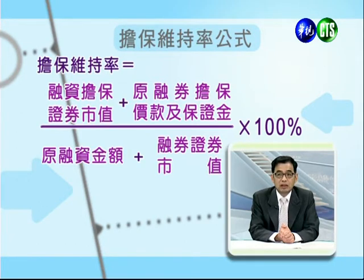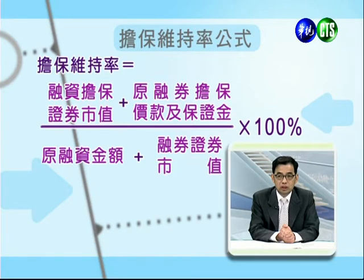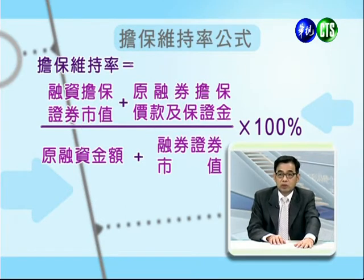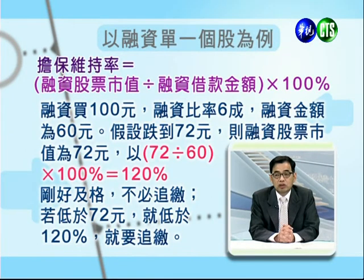担保维持率的计算公式：分子是融资担保证券市值加上原融券担保价款以及保证金（目前规定九成）；分母是原融资金额加上融券证券的市值，再乘以100%，算出来称为担保维持率。比如用融资买进股票，今天收盘价是十万，融资担保证券市值就是十万；买十万块股票融资六万，六万就是原融资金额。课文里有非常清楚的说明，我们用例子来让各位更容易明白。